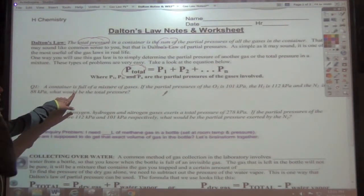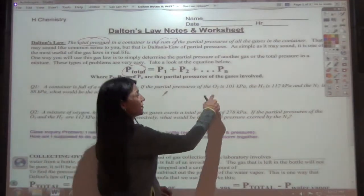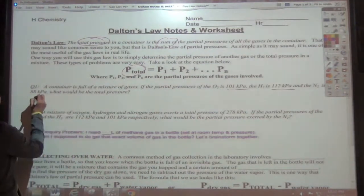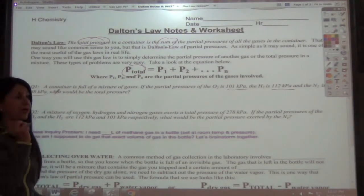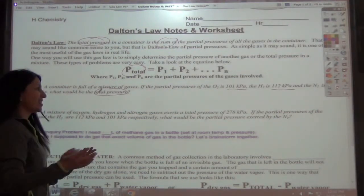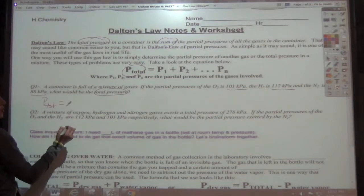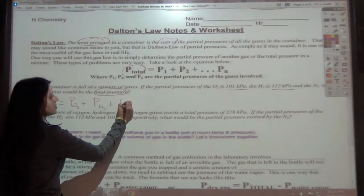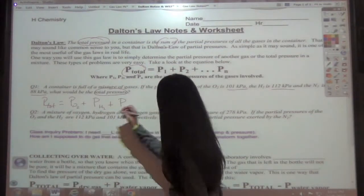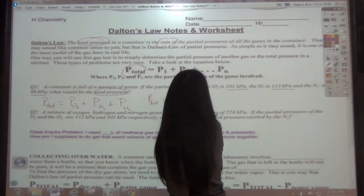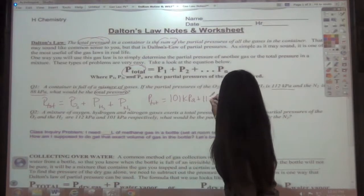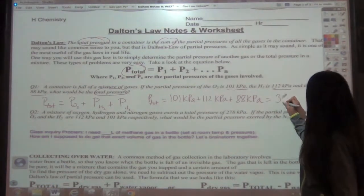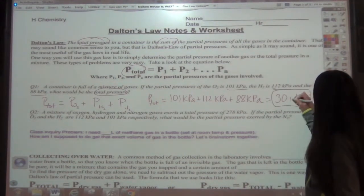So let's take a look at this question here. This says that you have a container that's full of a mixture of gases and the partial pressure of the oxygen is 101 kPa, and we've got hydrogen in there that's 112 kPa, and then we have some nitrogen that's in there at 88 kPa. And they want to know what the total is. What do we do? We add them up. So we write that the total pressure is equal to the PO2 (and this is a subscript) plus the PH2 plus the PN2. And so then I would just say that it's equal to 101 plus the 112 kPa plus the 88 kPa. And if we add this up, what do we get? 301 kPa. Perfect.